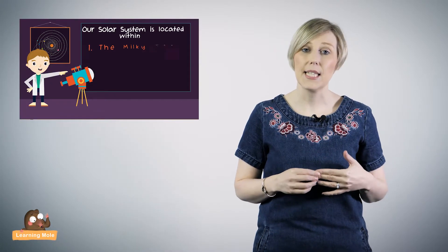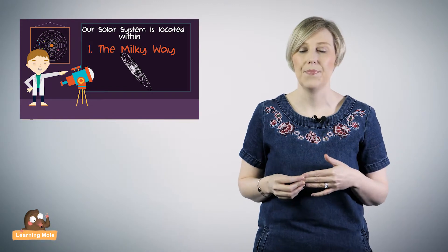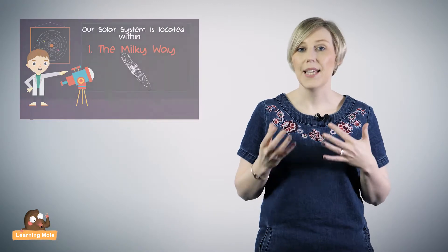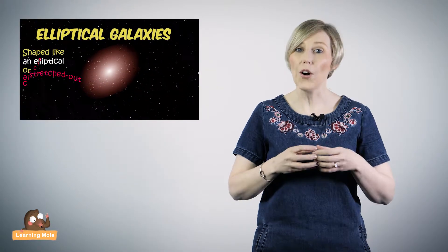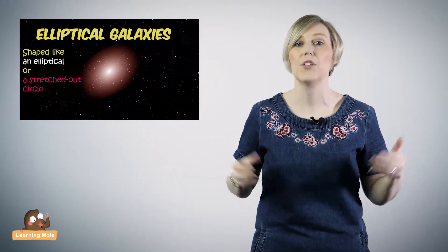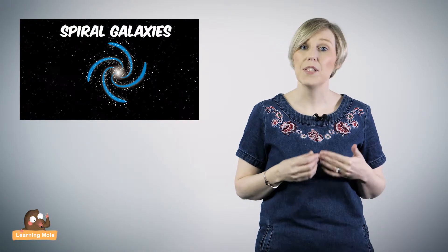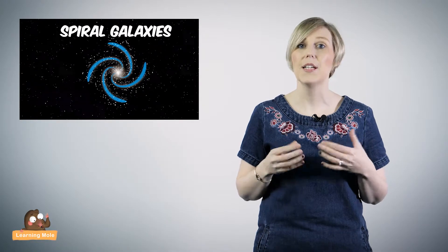Let's recap on all the facts you've learnt about galaxies and stars. Our solar system is located in the Milky Way galaxy. Elliptical galaxies are shaped like an elliptical or a stretched out circle. The main feature of spiral galaxies like the Milky Way is their spiral shape.